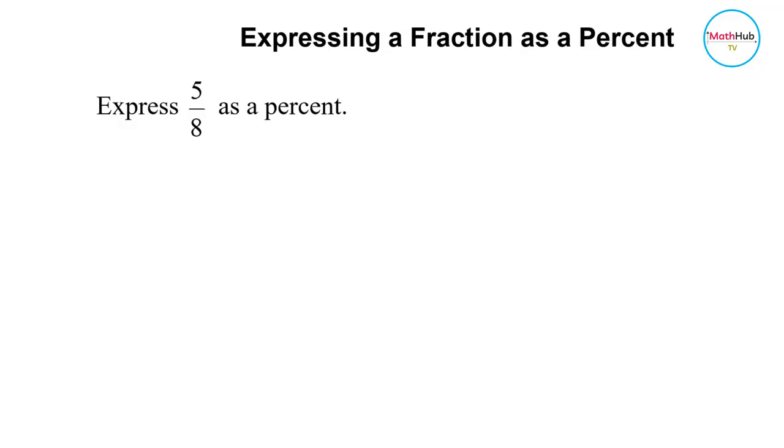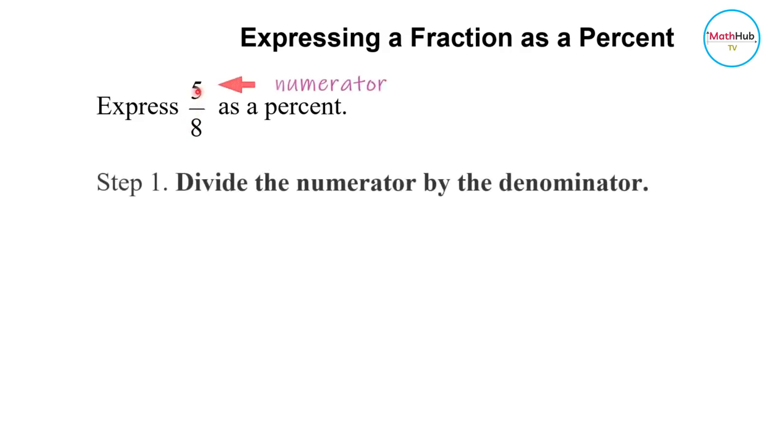We want to express 5/8 as a percent. To do this, we divide 5 by 8—numerator divided by denominator. So 5 divided by 8 equals 0.625.